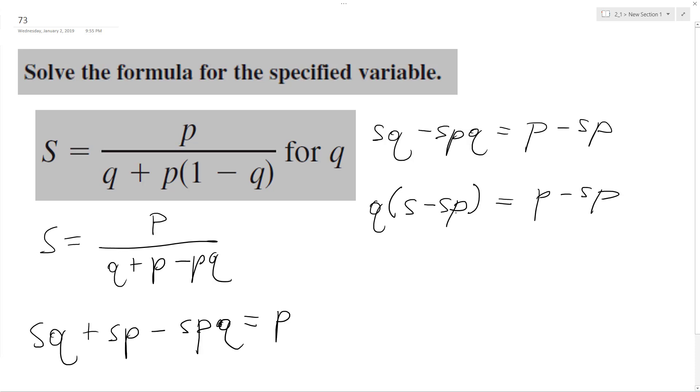Divide both sides by S minus SP. And we end up with Q is equal to P minus SP over S minus SP.